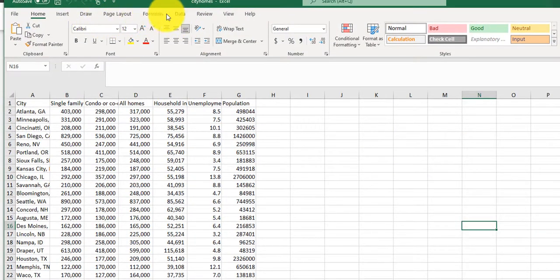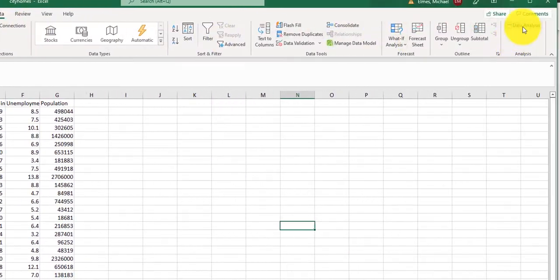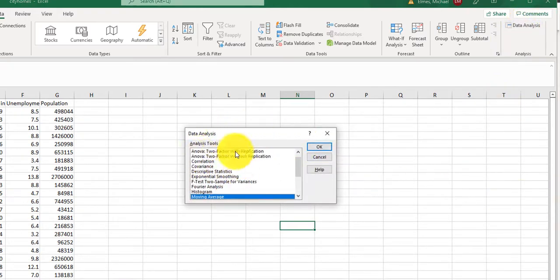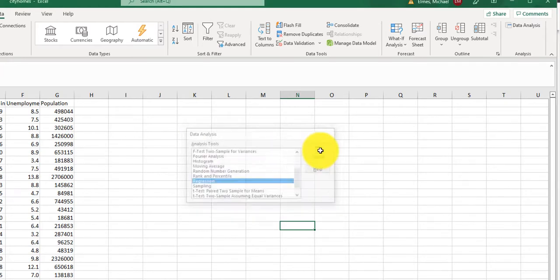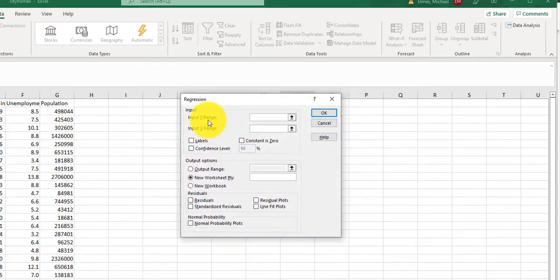And now when I click data, to the right you'll notice it says data analysis. And I get this little window. So we're going to be working with regression. And then I click OK. And it asks me for my Y range and my X range. So this is my response variable and my explanatory variable.